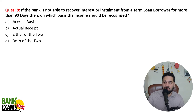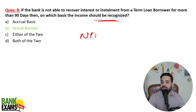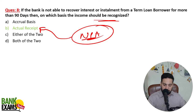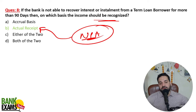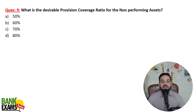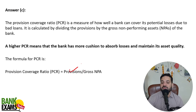If the bank is not able to recover interest or installment on a term loan for more than 90 days, income should be recognized on actual receipt basis — it is now an NPA, not accrual basis. The desirable Provision Coverage Ratio (PCR) for NPAs is 70%. PCR equals provisions divided by gross NPAs. A bill purchased or discounted should be treated as NPA if the bill remains overdue and unpaid for a period of 90 days.